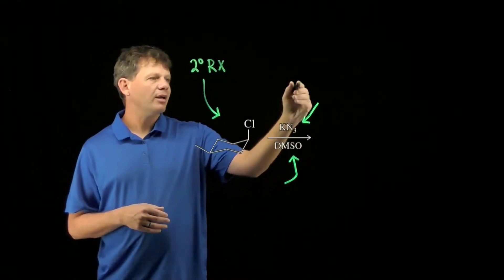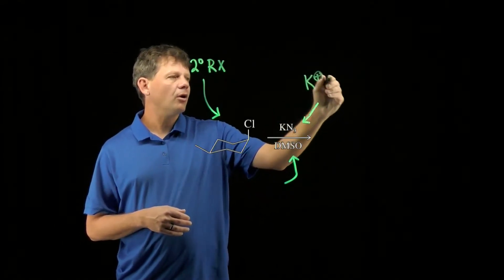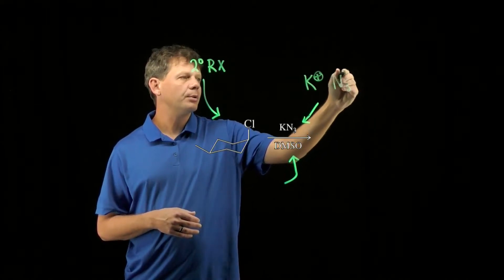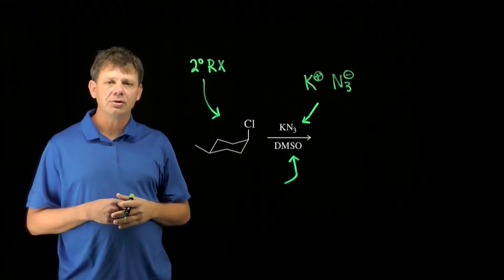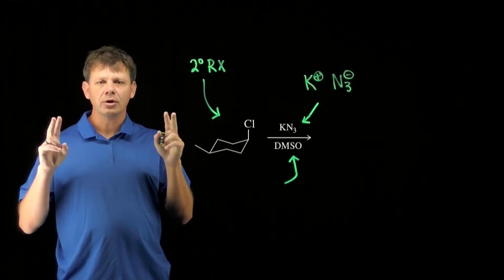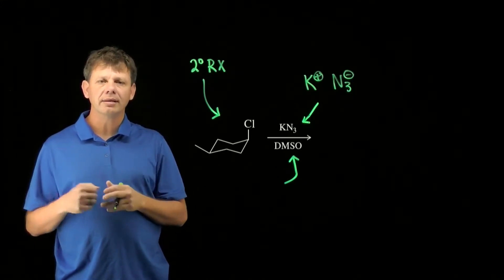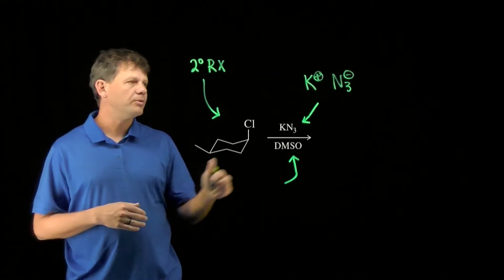Potassium azide written as an ionic salt K plus and N3 minus shows us that the nucleophile here has a negative charge. Negatively charged nucleophiles are usually considered good nucleophiles and will more likely do SN2 substitution.